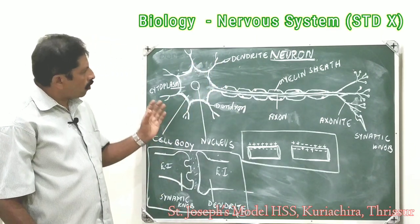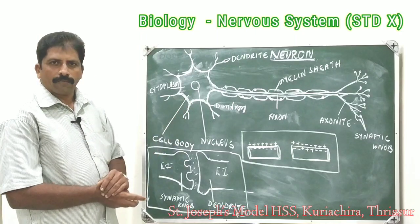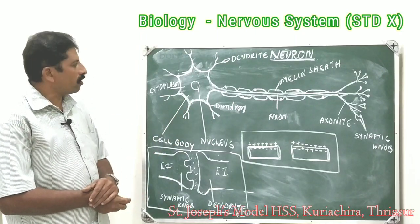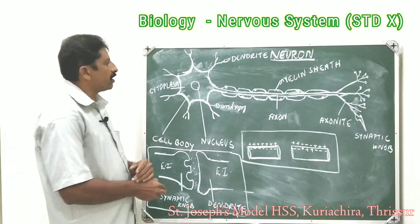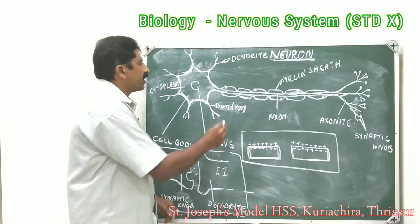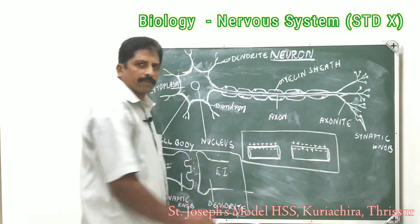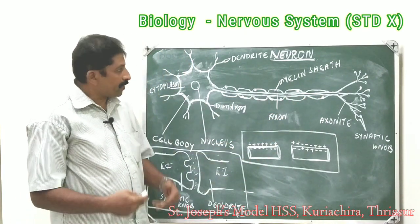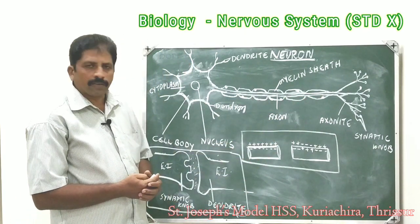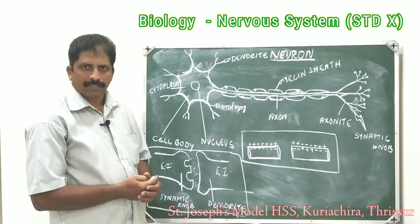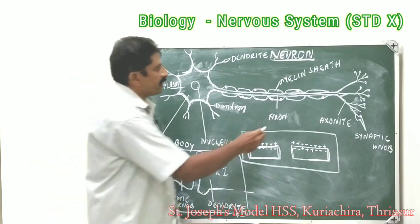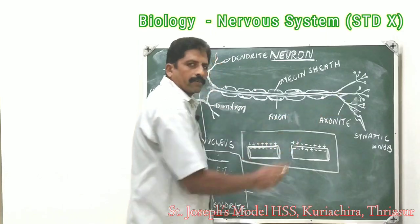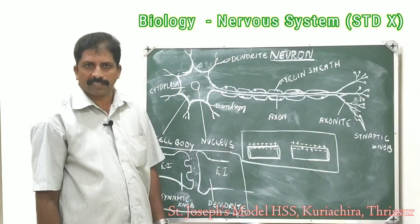One of the dendrons is longer than the others — this longest dendron is called the axon. And the branches of the axon are called axonites.